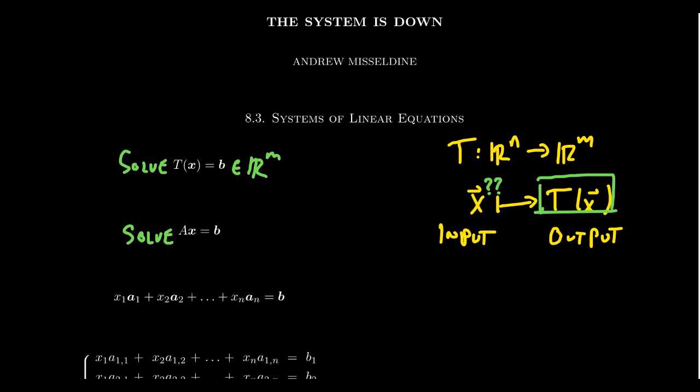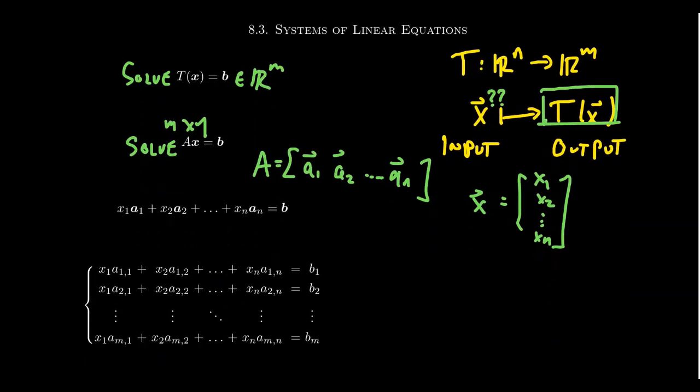Now suppose that our matrix A has the following column vectors. We have a_1, a_2, all the way up to a_n. And we should mention throughout all this that A, of course, is an m by n matrix in this consideration. So the column vectors of A are a_1, a_2 up to a_n. And let's also suppose the vector x has as its entries x_1, x_2, all the way down to x_n. Now if we take this matrix with these column vectors and this vector with those entries, then multiplying the matrix by the vector is equivalent to this linear combination. Remember the product of a matrix by a vector is the linear combination of the column vectors of said matrix using as the coefficients the entry of the vector. So A times x is the same thing as x_1 times a_1 plus x_2 times a_2 and adding all this way up to x_n times a_n.